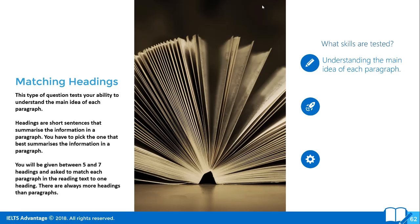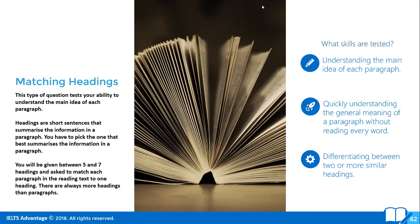What skills are tested? Understanding the main idea of each paragraph — but not only that, they're also testing how to quickly understand the general meaning of the paragraph without reading every word. Skimming does not mean reading something really quickly. It means strategically looking at certain parts of the paragraph so that you can understand the general meaning. They're also testing how to differentiate between two or more similar headings — in other words, how to differentiate between different meanings. You might get two headings that are very similar, and what they really want you to do is understand what each means and determine which one matches the paragraph.